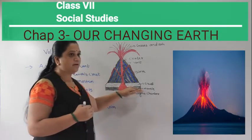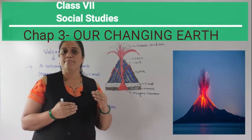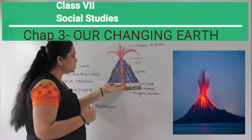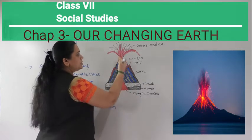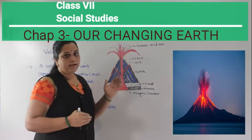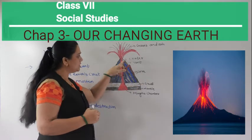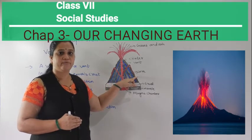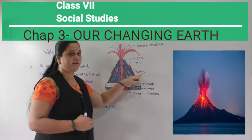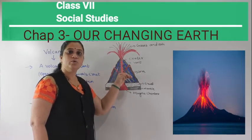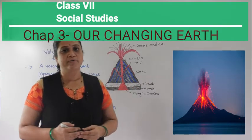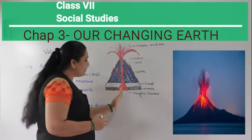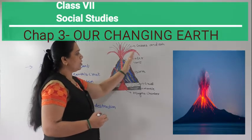The temperature and pressure in the magma chamber layer is very high. When this molten magma comes to the earth's surface, it becomes lava. When lava cools down, it changes into different types of rock, as we have studied in geography. The pipe through which magma travels is called the vent.